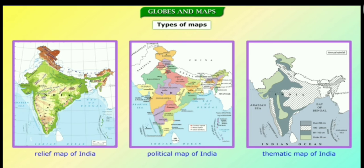Thematic maps give us details of certain themes such as rainfall, vegetation, industries or minerals found in various regions.